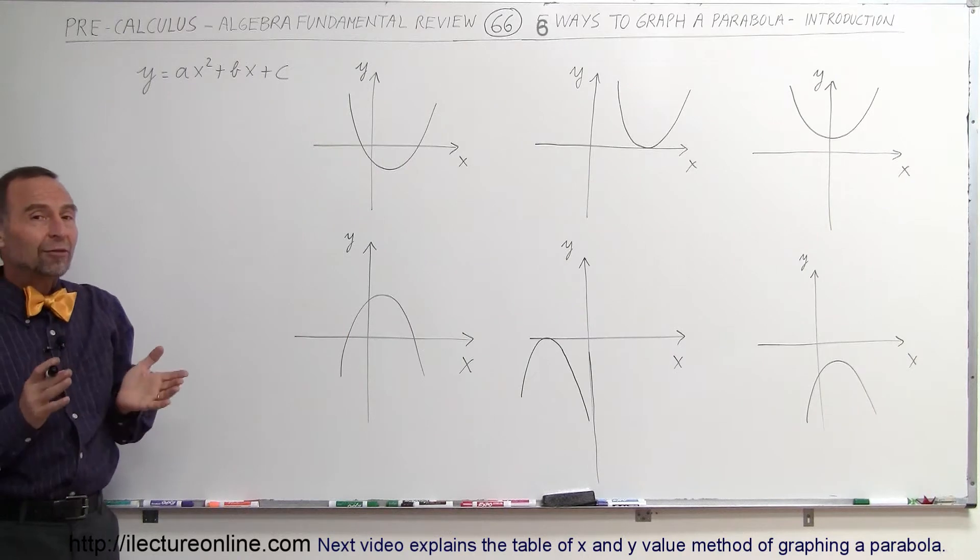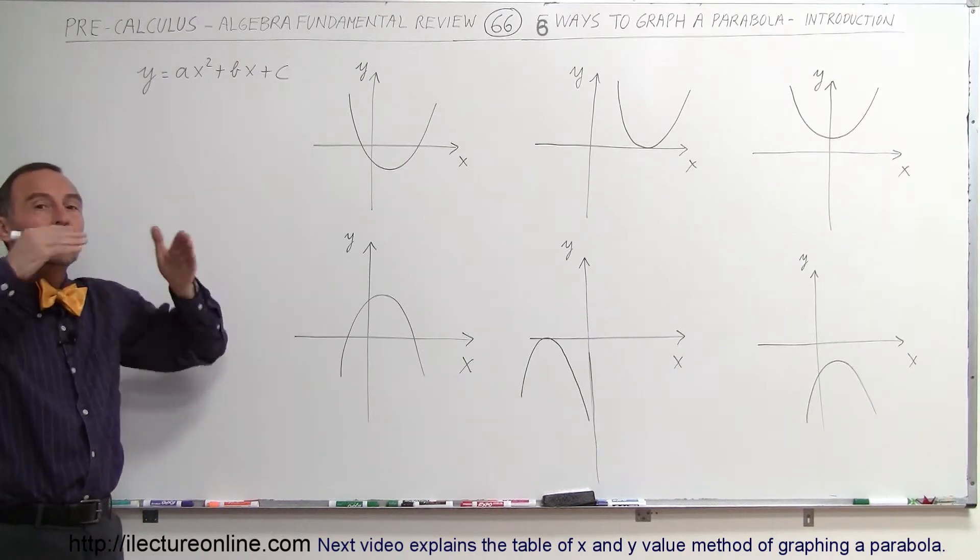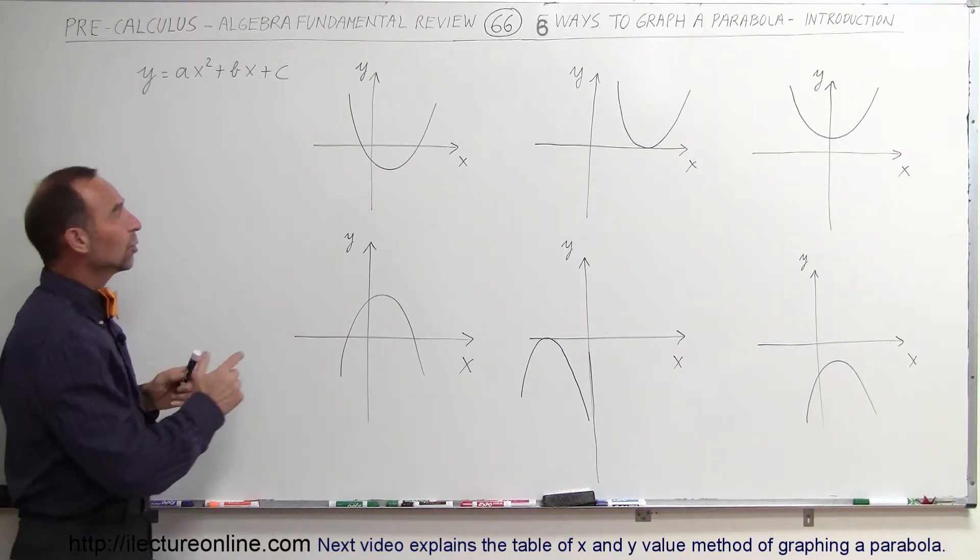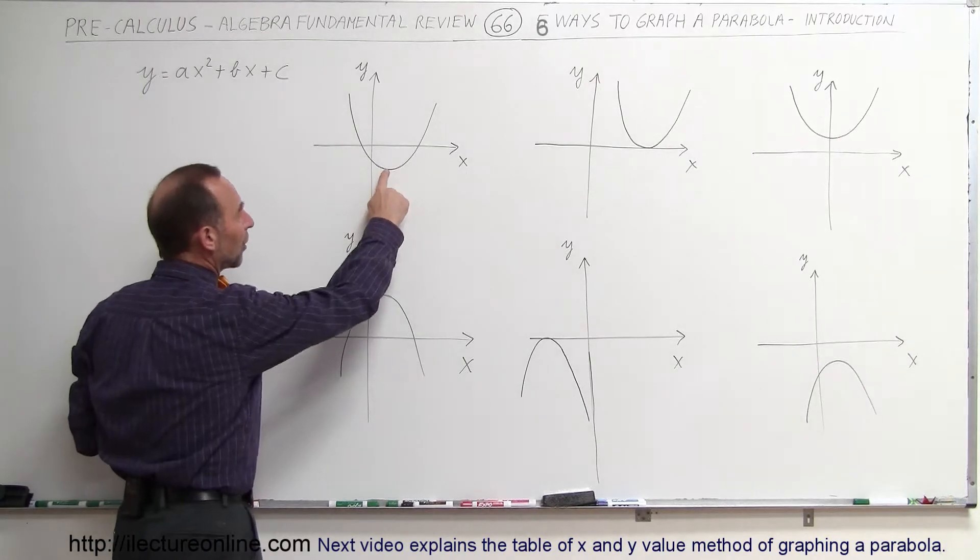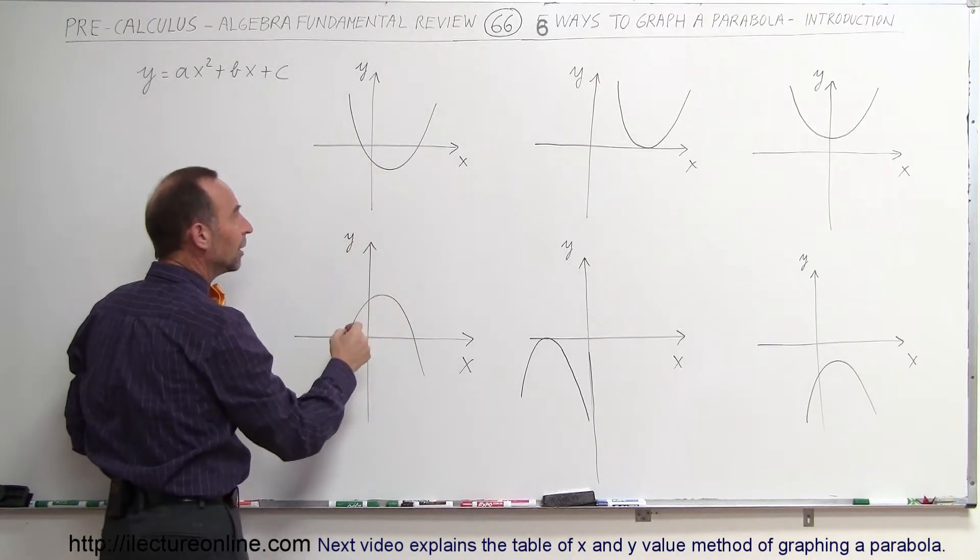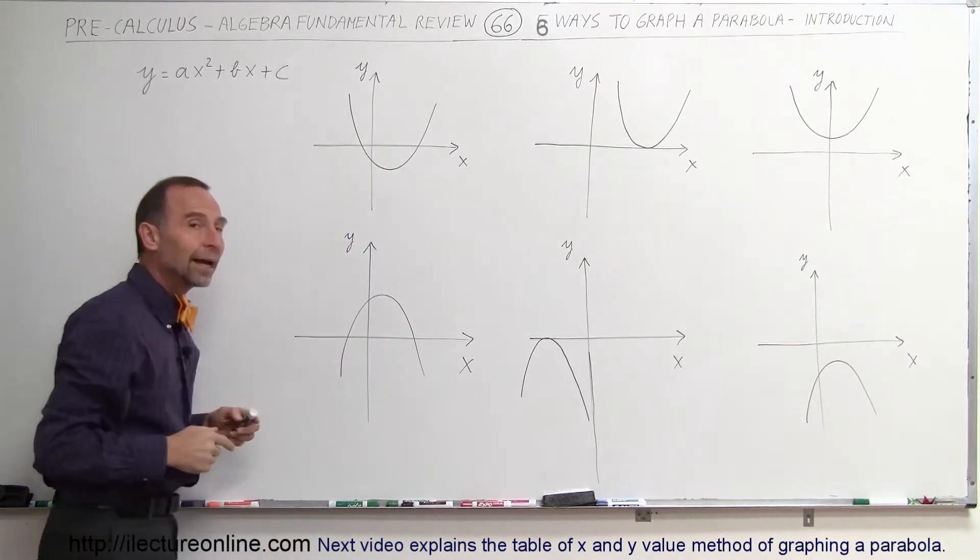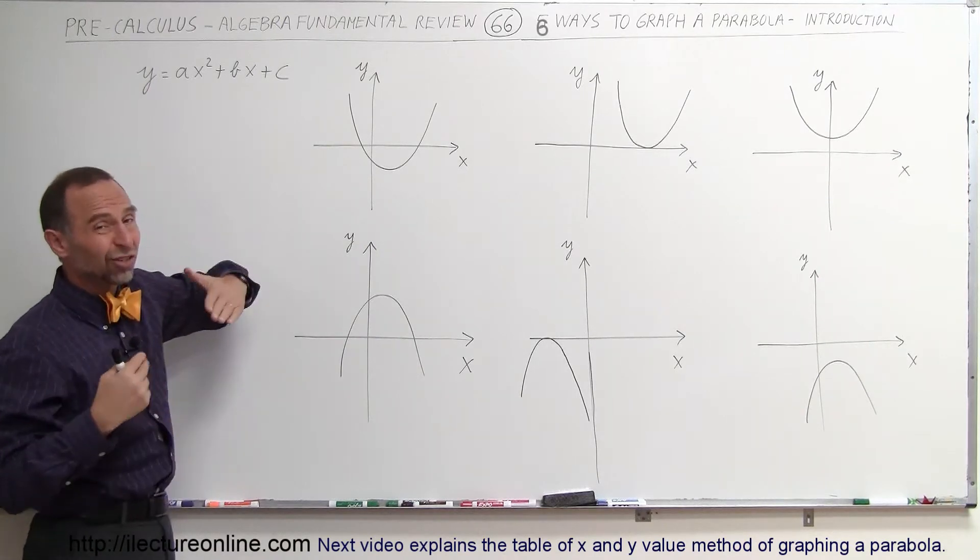The way parabolas are graphed, they either open upward or they open downward. The vertex, which is either the lowest point on the parabola or the highest point on the parabola, can either be above or below the axis. The x-axis, I should say, specifically.